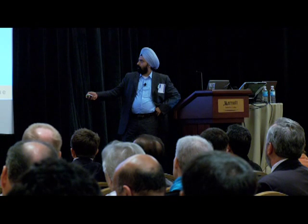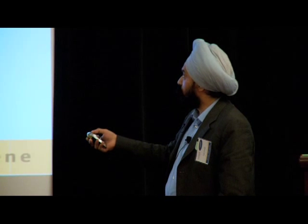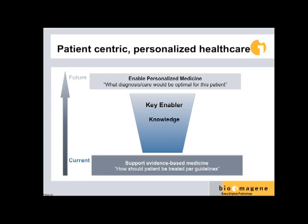So where the current state of personalized medicine is, you support evidence-based medicine. You have some guidelines that are derived for a population and say, how do I make sure that my guideline is applied correctly to this patient? What we want to go to is: what diagnosis and care would be optimal for this patient, based on everything I know about this patient and all that's been published that could be relevant — what's the relevant therapy and diagnosis?